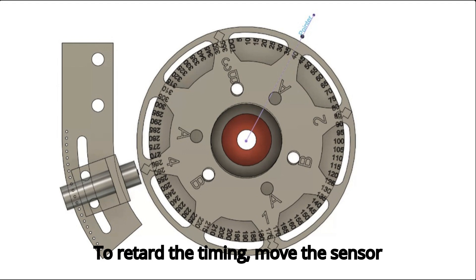To retard the timing, move the sensor adjustment bracket up. To advance the timing, move the sensor adjustment bracket down.